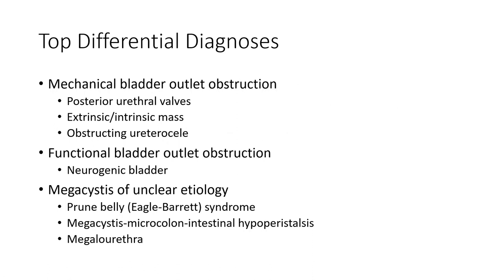Differential diagnosis: Mechanical bladder outlet obstruction — posterior urethral valve, extrinsic mass, obstructing ureterocele. Functional bladder outlet obstruction — neurogenic bladder, megacystis of unclear etiology, prune belly syndrome, megacystis microcolon intestinal hypoperistalsis syndrome, and megalourethra.